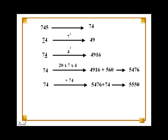Next, as explained earlier, we add 74 to 5476 and get 5550. Now just write the square of 5, which is 25, at the end of 5550 to get 555,025. This is the square of 745.